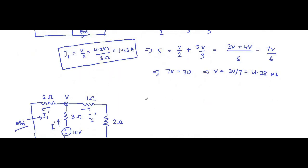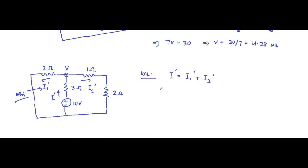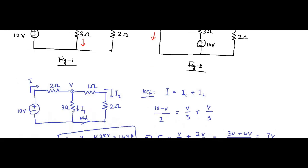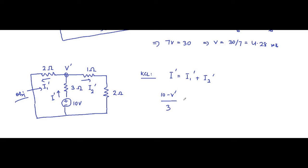Again the KCL equation is: i dash = i1 dash + i2 dash. We call the node voltage v dash — using a different label to avoid confusion with the previous figure. Writing i1 dash in terms of voltage: it is (10 − v dash) / 3. Then i1 dash = v dash / 2 ohm, and i2 dash = v dash / (1 + 2) = v dash / 3.